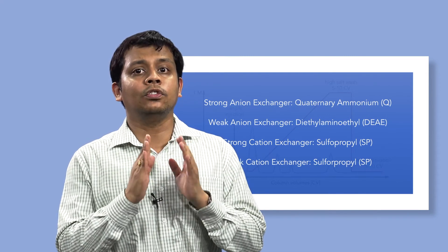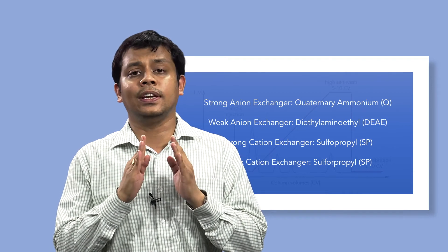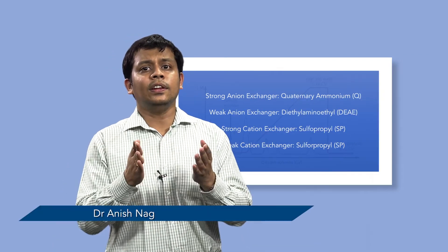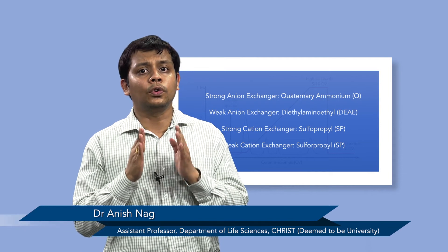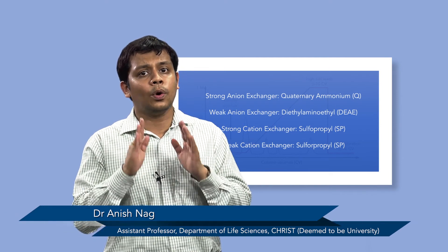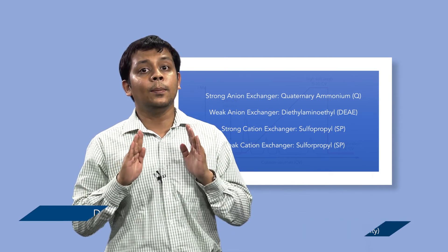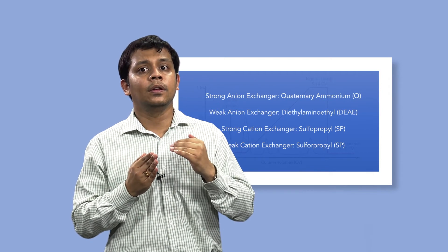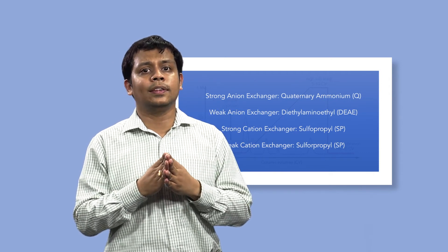Strong ion exchangers show no variation in ion exchange capacity with the change of pH. These exchangers do not take up or lose protons with changing pH and so have no buffering capacity, remaining fully charged over a broad pH range. Strong ion exchangers include Q, S, and SP.